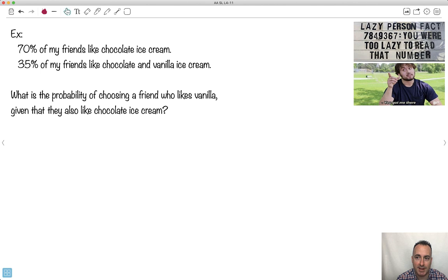I like this one, lazy person number fact. You're too lazy to read that number. Got me there. All right, so we have an example here. 70% of my friends like chocolate ice cream. And 35% of my friends like chocolate and vanilla. So what's the probability of choosing a friend who likes vanilla given that they also like chocolate? So a lot of these questions, the key part is just to decode what they're asking for. So what does this tell me?